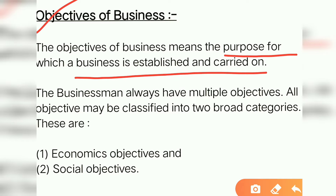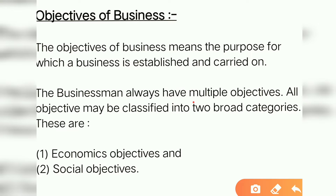An objective can be anything. Organizations do not have only one objective — they have multiple objectives. For example, one objective can be to increase sales by 10% in one year. These are the types of small objectives which all businesses have. The businessman always has multiple objectives, and all objectives may be classified into two broad categories: economic objectives and social objectives.